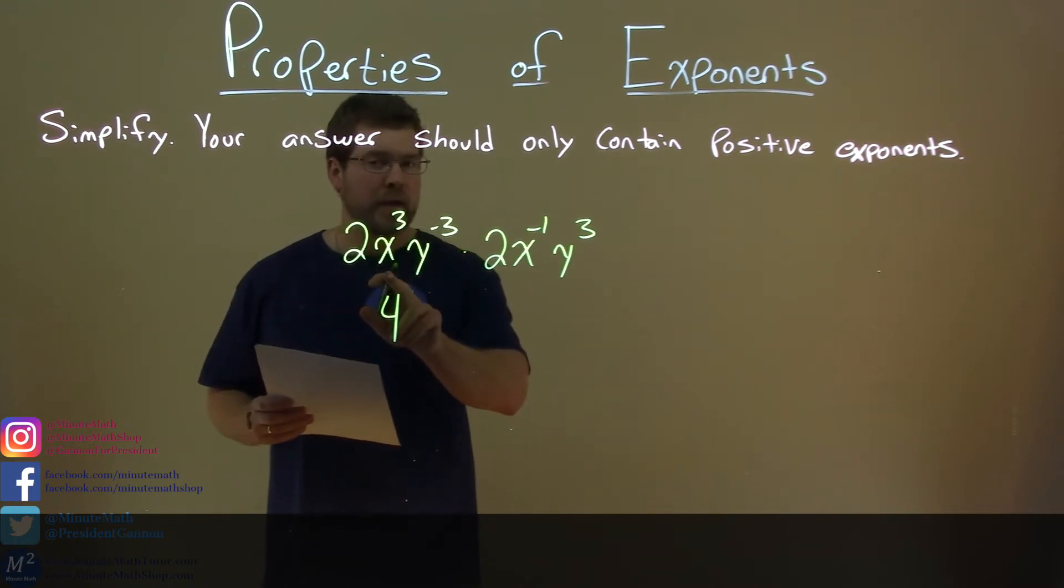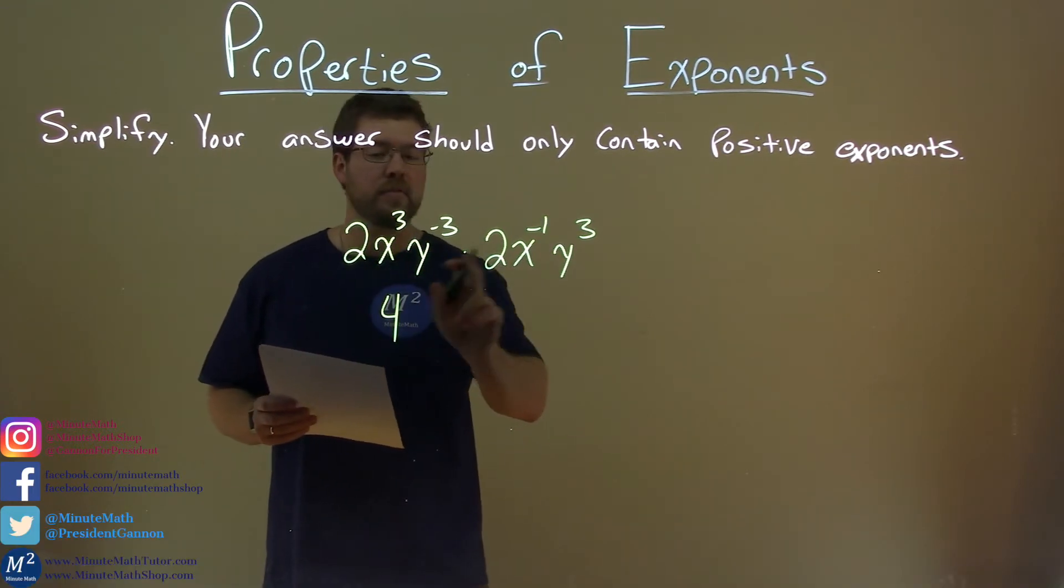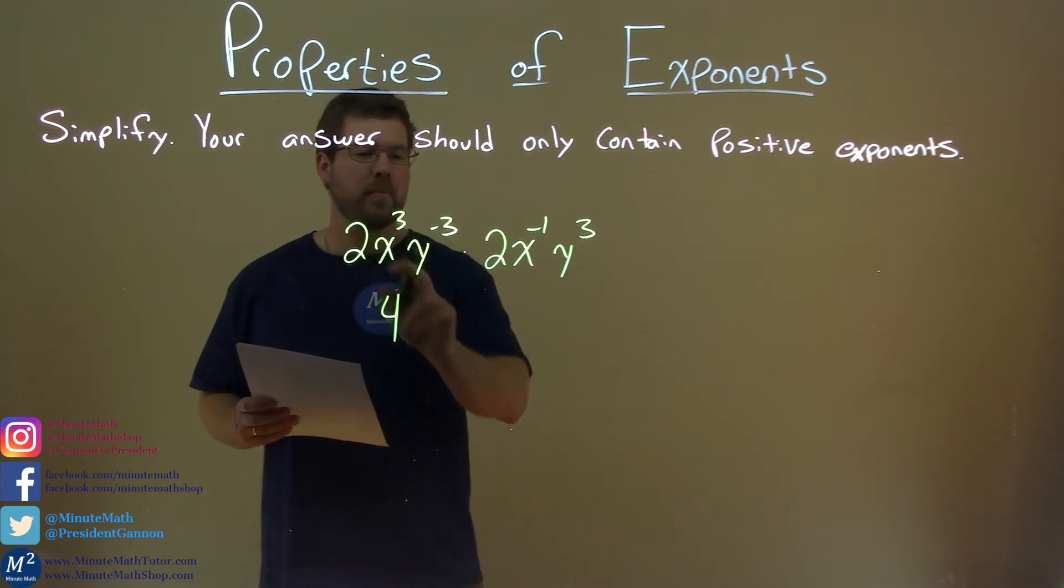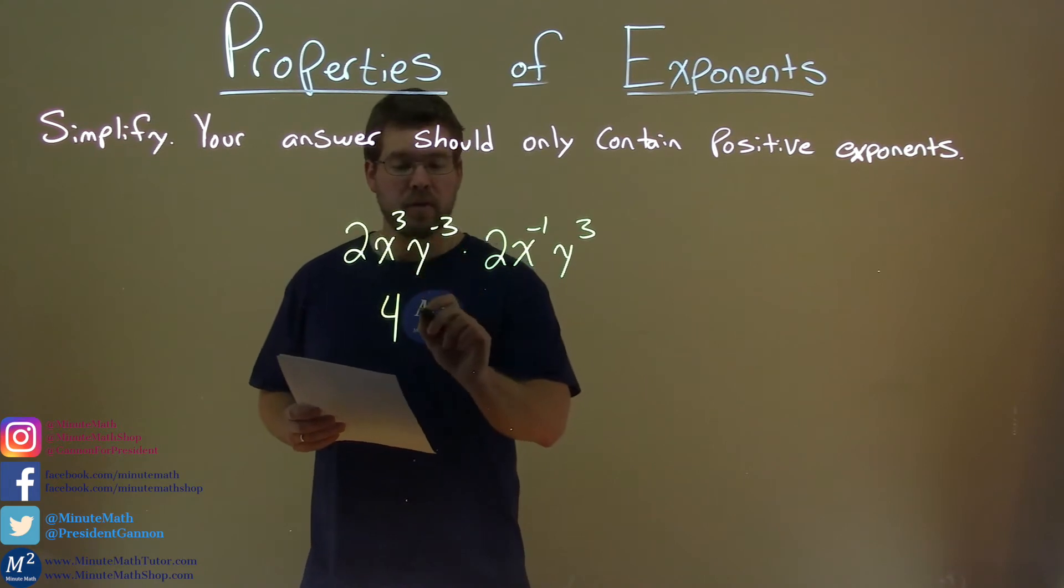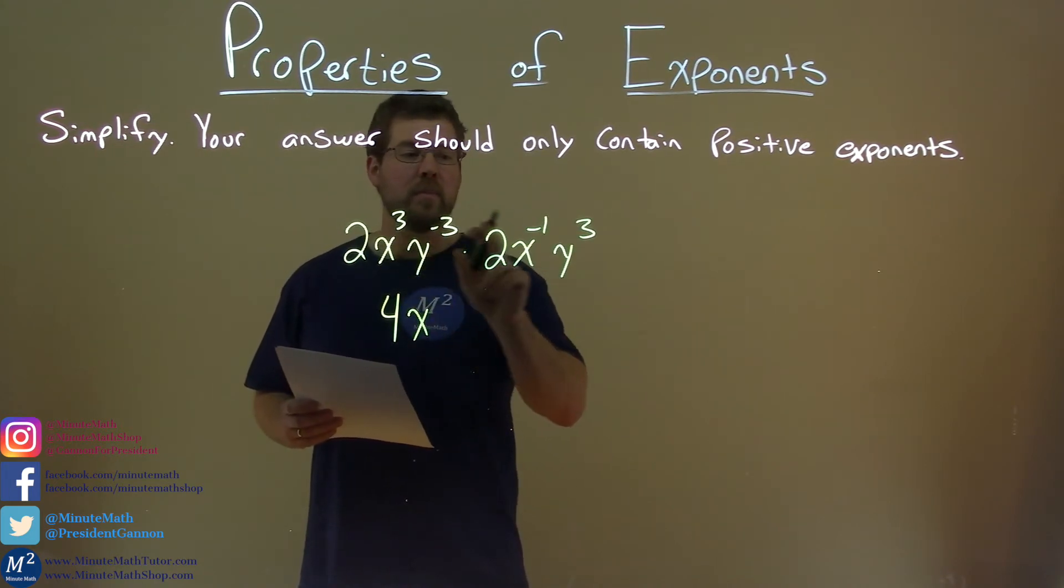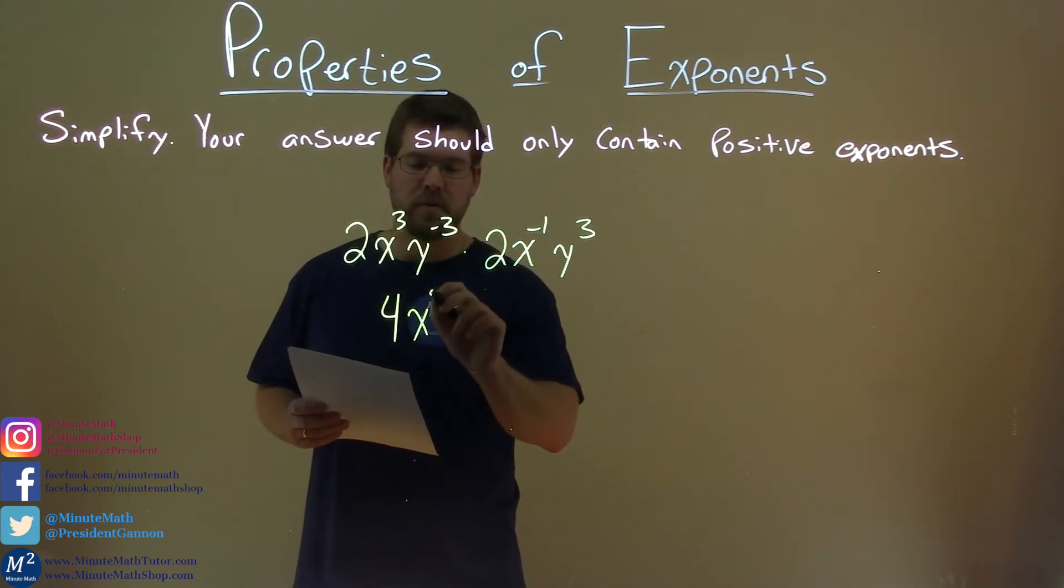Now, again, we need to multiply our like terms. Let's deal with the x's first. x to the third power, times x to the negative one. Again, same base, add the exponents here. So, we have x to the 3 plus a negative 1, which is a positive 2.